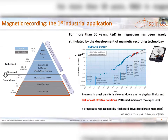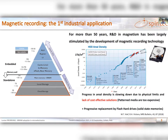Let me start with the added value of magnetic recording and its first industrial application. For more than 50 years, R&D in magnetism has been largely stimulated by the development of magnetic recording technology, with the evolution of aerial density driven by developments going from inductive heads, MR heads, GMR, to TMR. This progress brought several advantages in terms of spintronics development.